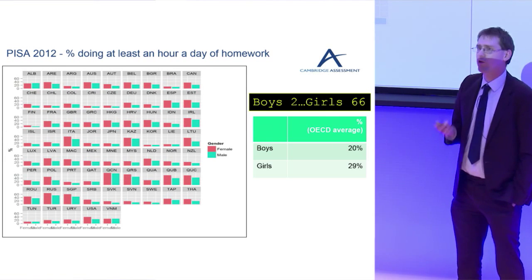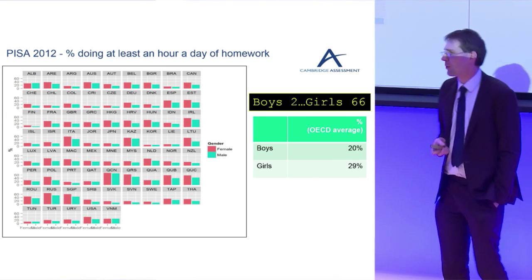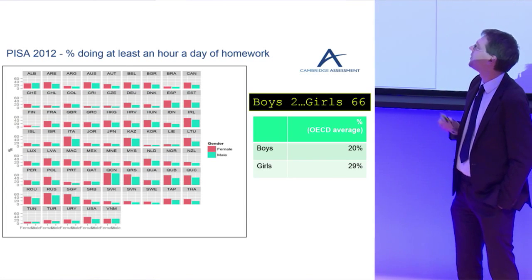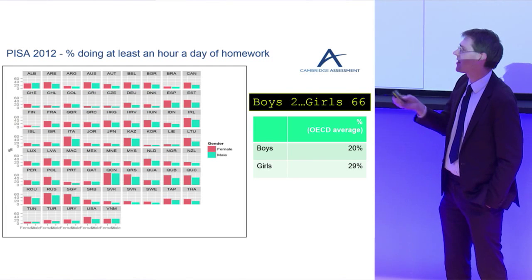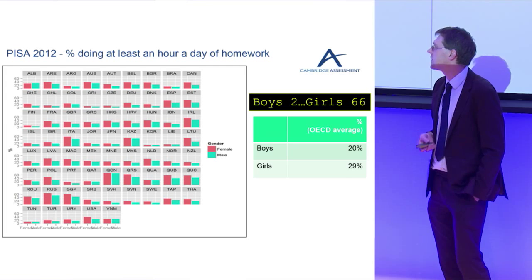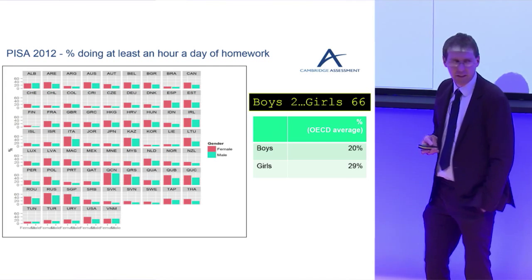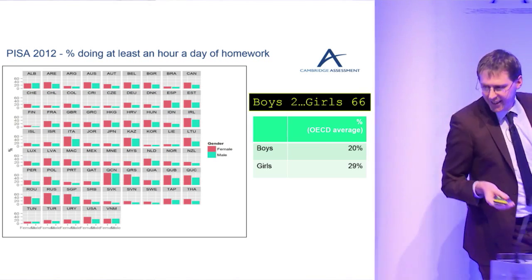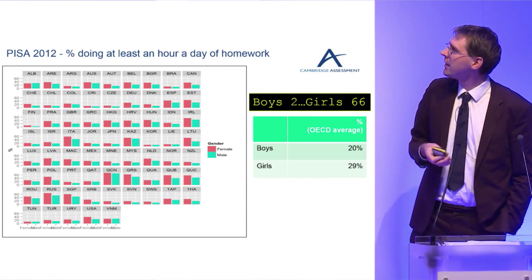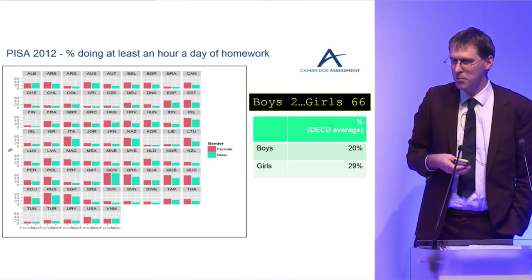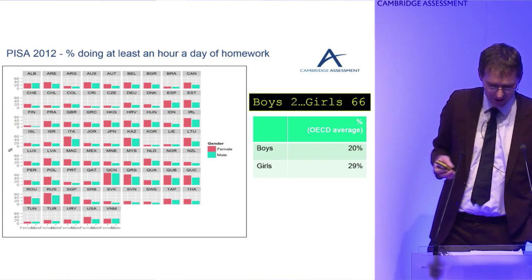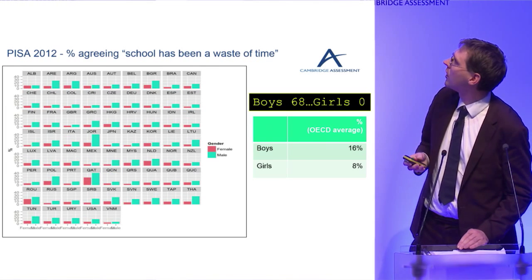The amount of time spent doing homework — at least seven hours a week — gives us 66-2 in favour of girls being more likely to do homework. The only exceptions are Albania and Vietnam. Everywhere else there are big differences.